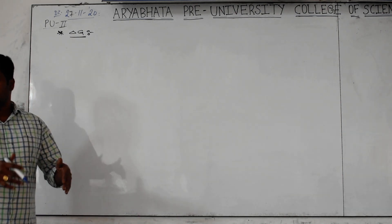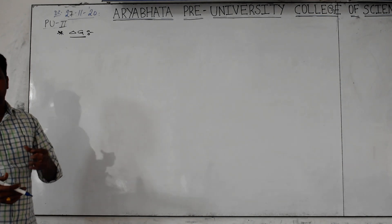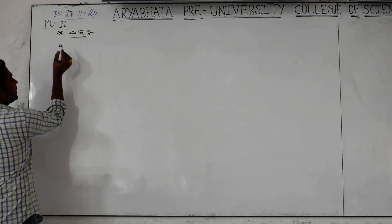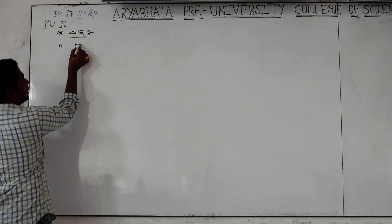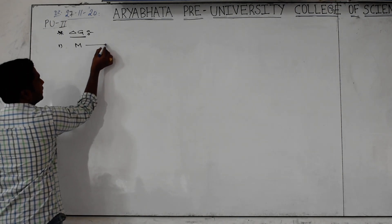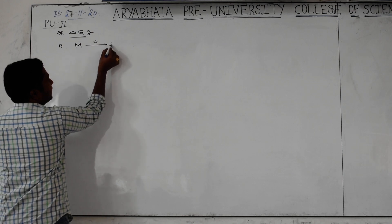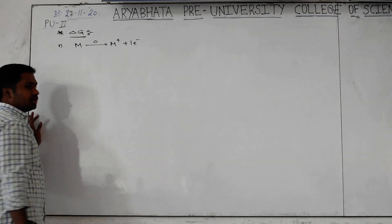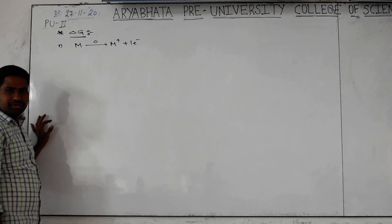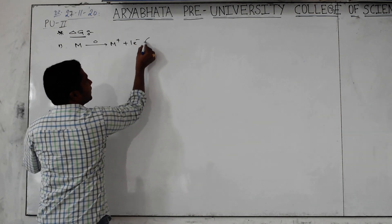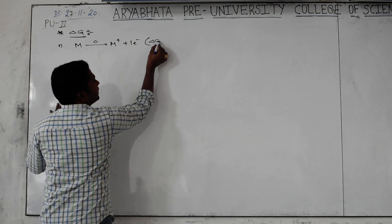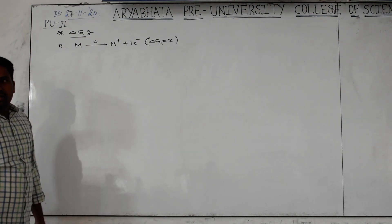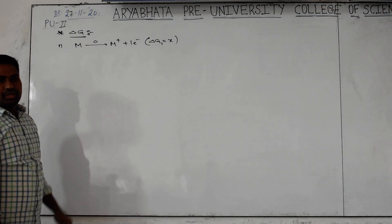If related problems are given in competitive exams, how can we solve them? Some important concepts I will explain. The first one I am explaining: if suppose one metal atom is there, it is undergoing oxidation, becoming M plus plus one electron. If losing out electron is going on, that is called oxidation. Then we are getting some delta G value — delta G1 is nothing but X. It is the delta G value for oxidation of the metal.